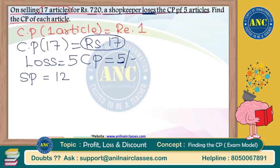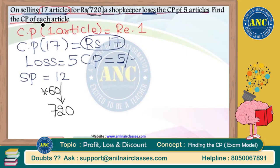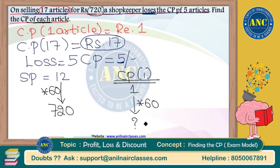Selling price = 17 minus 5 = 12 rupees. But according to the question, selling price is 720 rupees. So 12 is becoming 720 — multiply by 60. The cost price of one article is 1 rupee, so multiply by 60: cost price = 60 rupees. No formulas required!